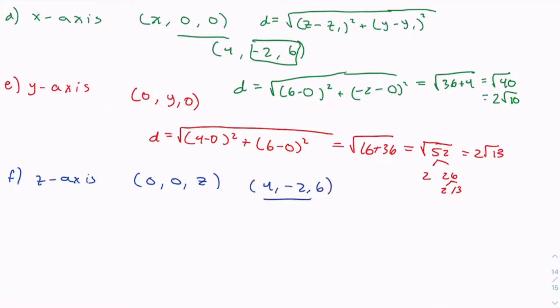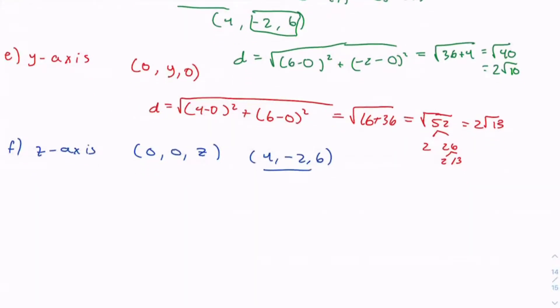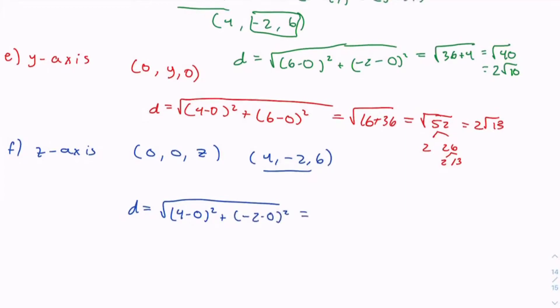We're going to compare the x and y components. So we have d = √[(4-0)² + (-2-0)²], which equals √(4² + (-2)²) = √(16 + 4) = √20. 4 and 5 equals 2√5.